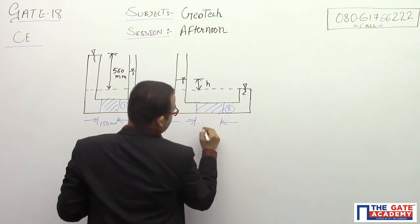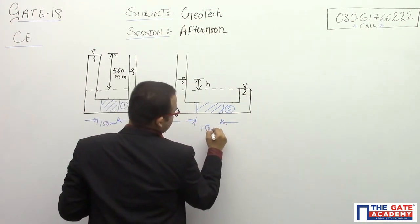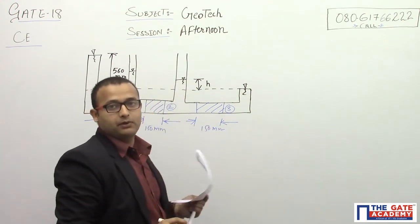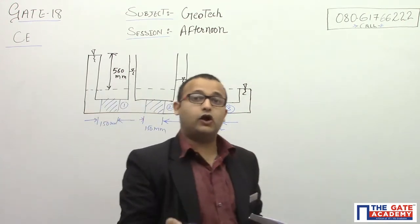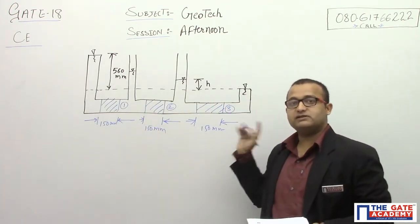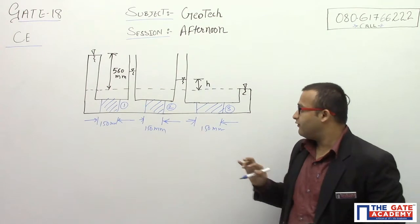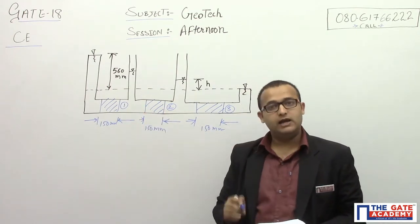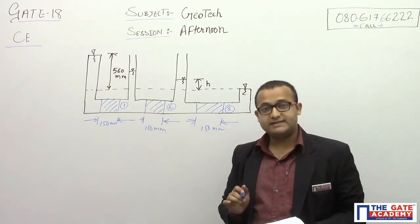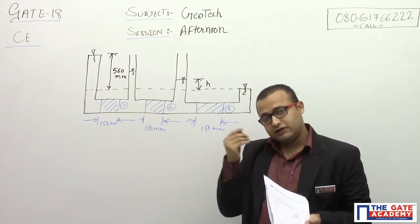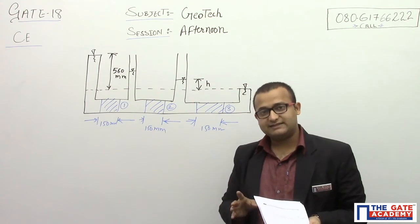One more thing to notice: the length is the same and the cross-sectional area of each sample is also the same — for soil 1, soil 2, and soil 3, the cross-sectional area is the same.